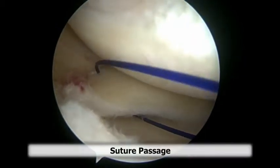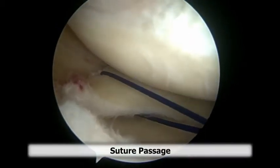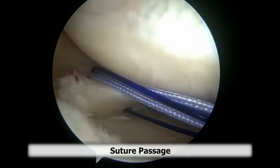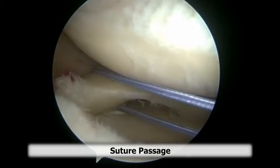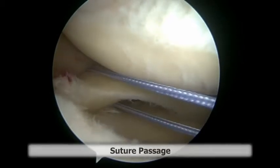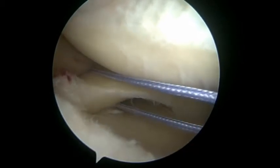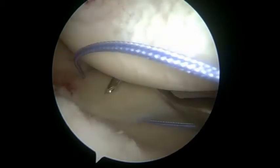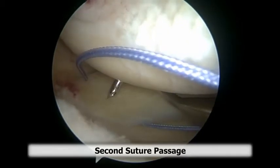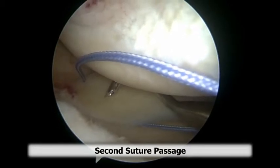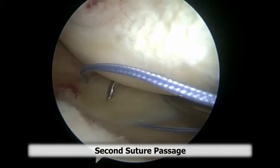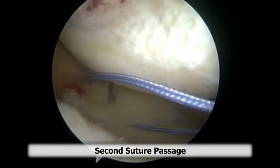The free end of the PDS is then tied around a high strength polyethylene suture, and the other end of the PDS is pulled, shuttling the high strength polyethylene suture through the meniscus tissue in standard fashion.